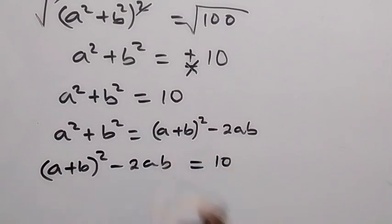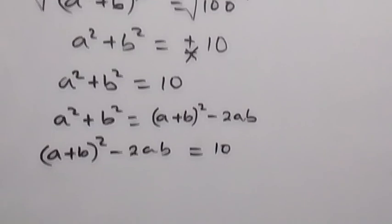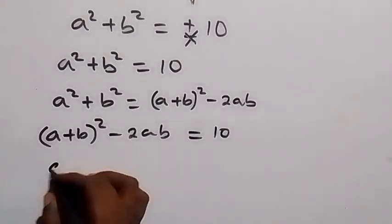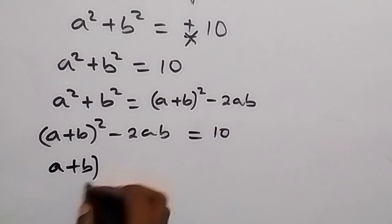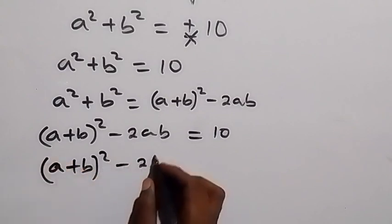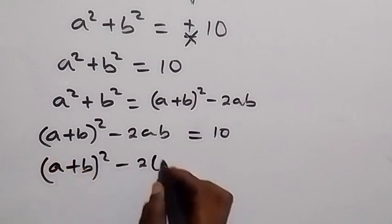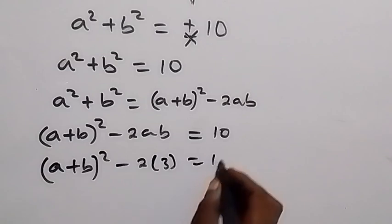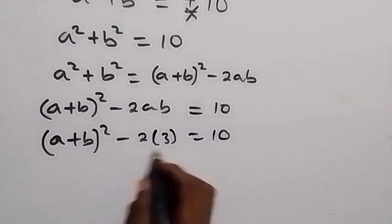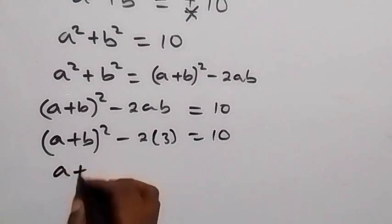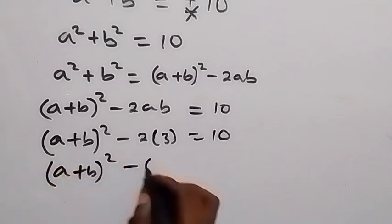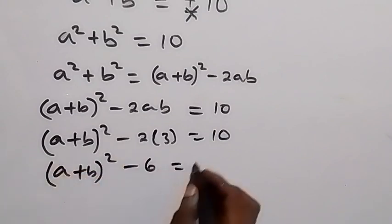And we have ab equal to 3. So when we put ab equal to 3, this becomes a plus b squared minus 2 times 3 equals to 10. And 2 times 3 is 6. So that's a plus b squared minus 6 equals to 10.